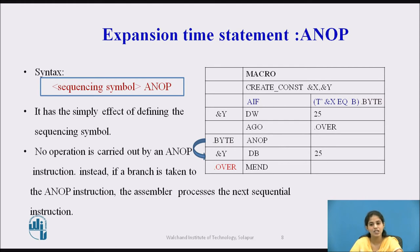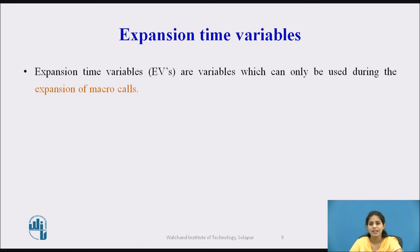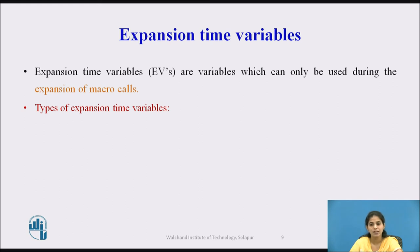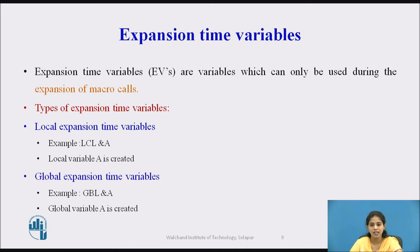Next we see the expansion time variables — the second advanced macro facility. Expansion time variables are variables which can only be used during the expansion of macro calls. There are two types: the local expansion time variable and the global expansion time variable. To declare a local expansion time variable, we use the word LCL followed by the variable name, e.g., &A.